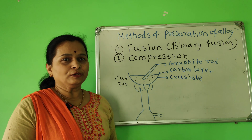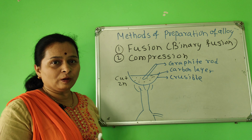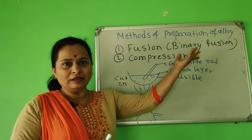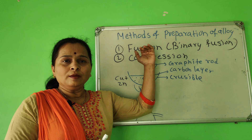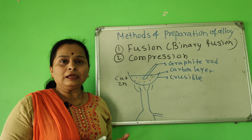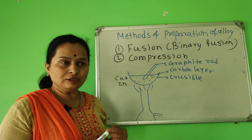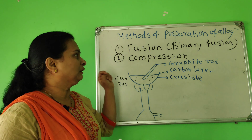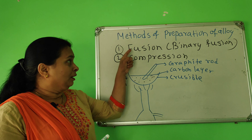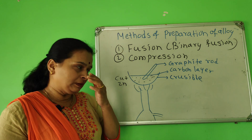Methods of preparation of alloy. There are two methods: first is fusion method, also known as binary fusion. In this method, the alloys made contain two elements only. Second is compression method.